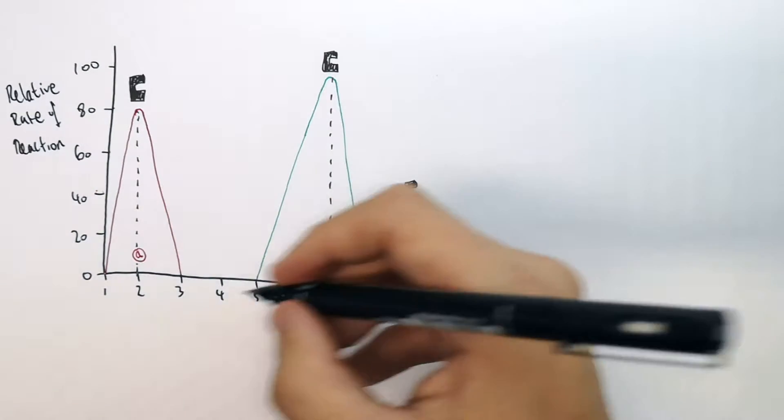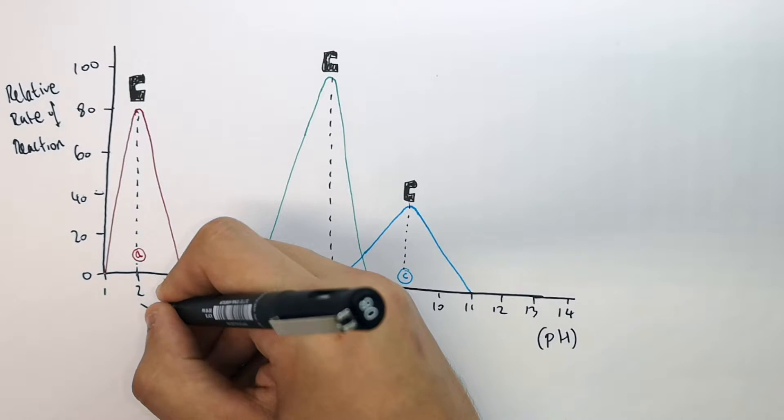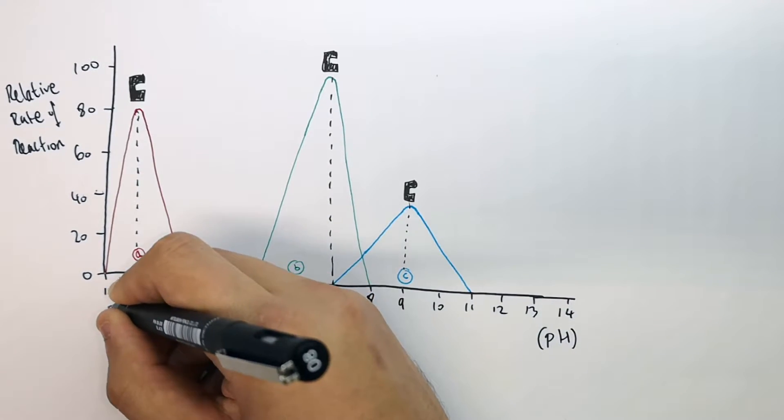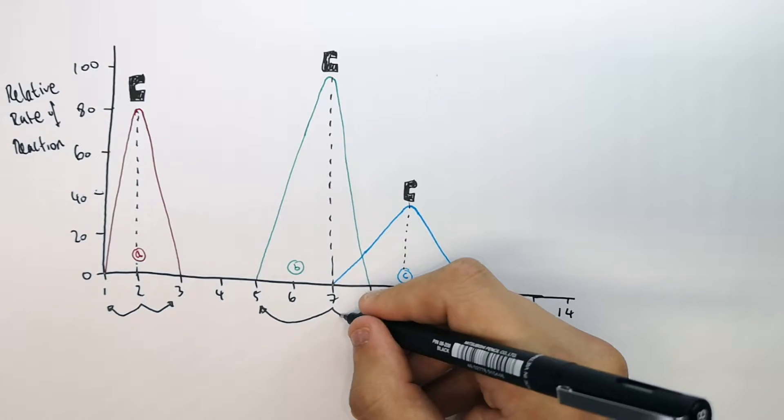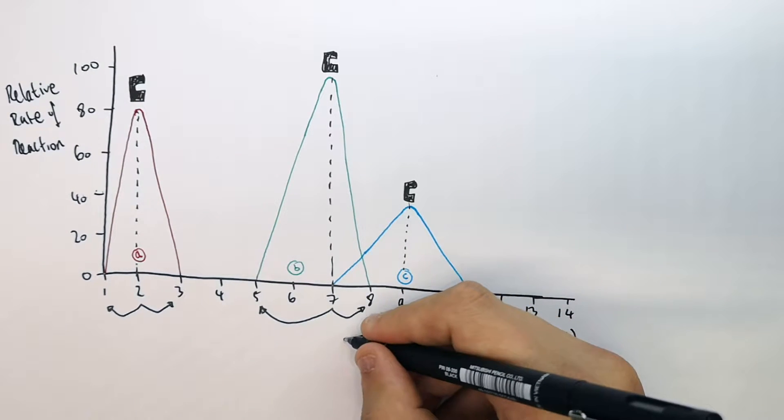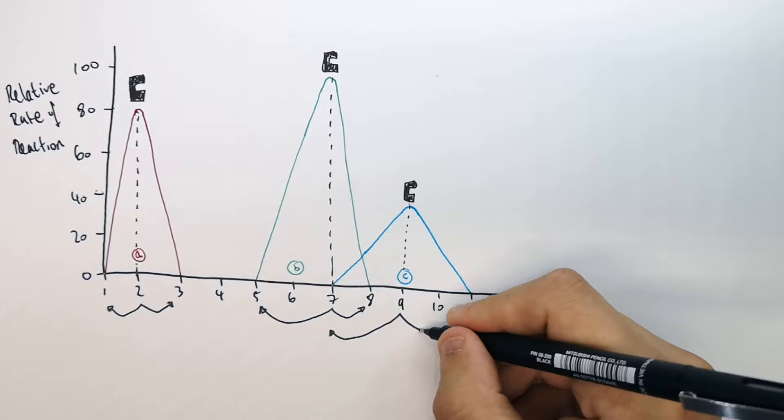With pH changes, if you go above or below the pH optimum for each enzyme, you can see that the rate of reaction decreases. So below 9, the rate decreases and above 9, the rate also decreases.